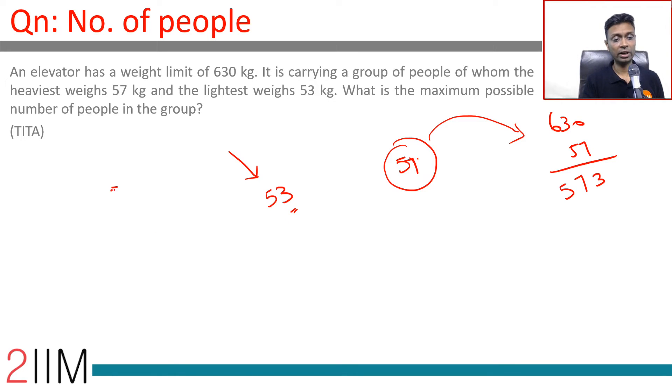573 divided by 53 equals 10 people. So 10 people weighing 53 kilograms and one weighing 57.